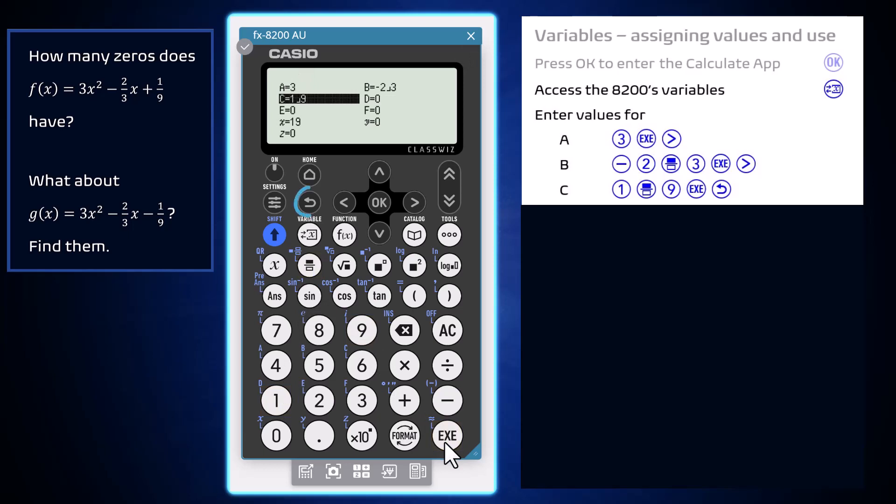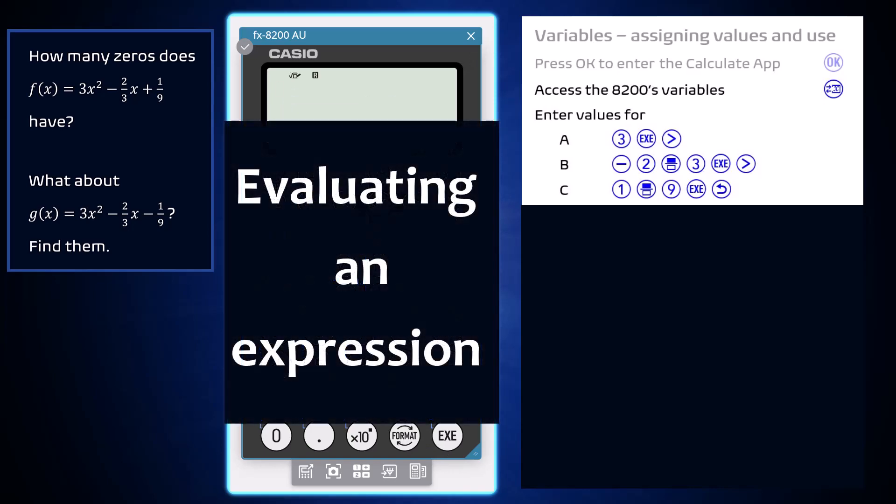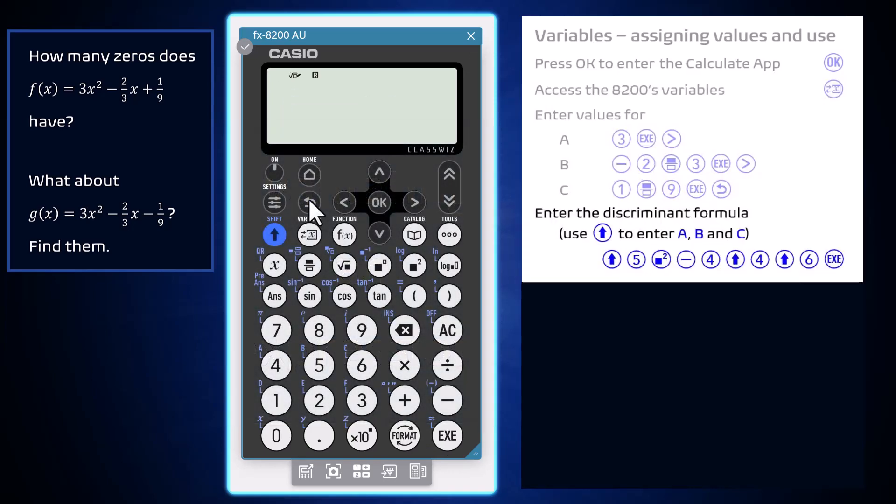With this done, press the Back key to exit the Variables editor. The discriminant formula B² take 4AC can now be evaluated using these assigned values of A, B and C. Enter the discriminant using the blue Shift key and then the 4, 5 and 6 keys to enter A, B and C.